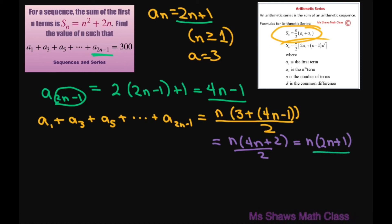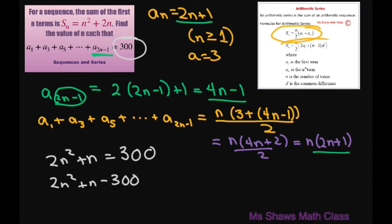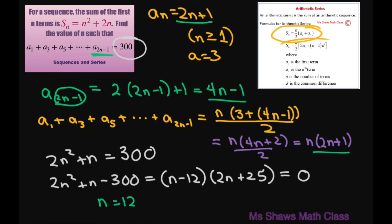Simplifying, we get 2n squared plus n, and we set this equal to 300. So 2n squared plus n minus 300 equals 0. Factoring this gives (n minus 12)(2n plus 25) equals 0. This gives n equals 12, or n equals negative 25 over 2. We disregard the negative solution because n must be greater than or equal to 1. Therefore, our answer is n equals 12.